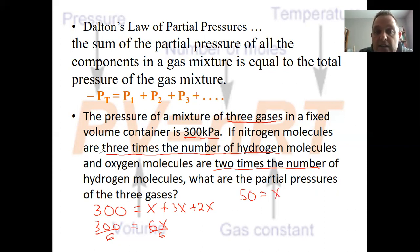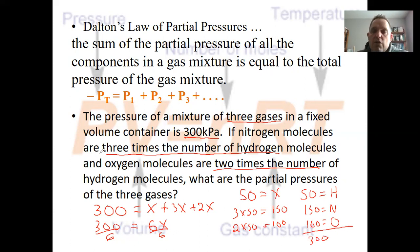Now we continue with our algebra. We got 300 on our left. On the right, we're going to add these up. 1x plus 3x plus 2x would give us 6x. Divide by 6 on both sides. 300 divided by 6 should be 50. So x equals 50. I said x was hydrogen, so hydrogen's pressure is 50. Nitrogen was 3 times, so 3 times 50 is 150. And oxygen was 2 times 50, which would be 100. This is using Dalton's law and a little bit of algebra to solve a problem.